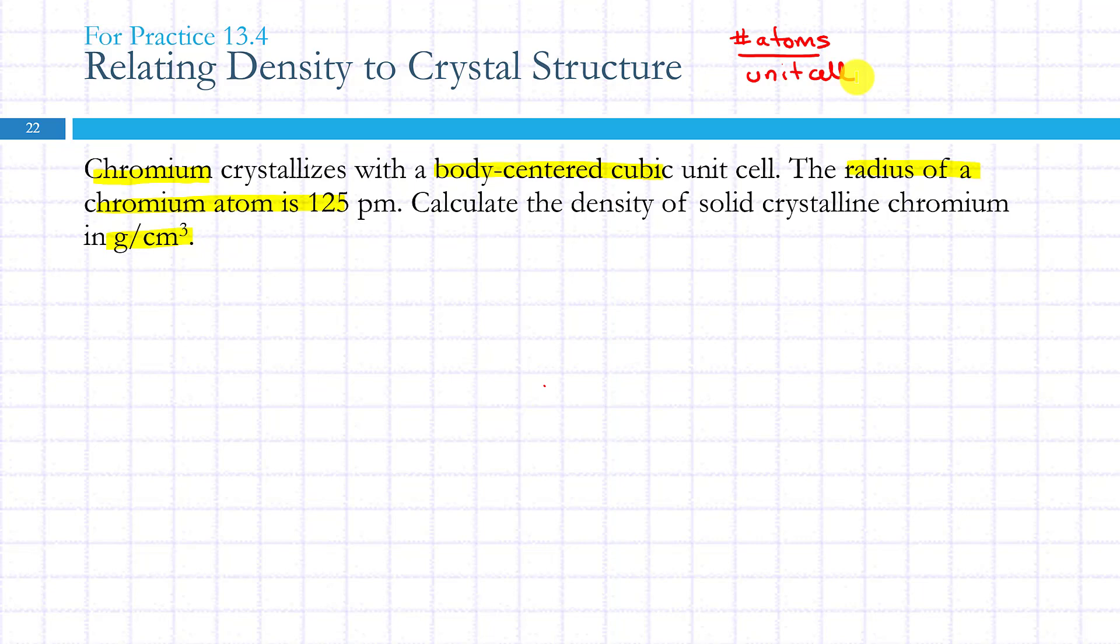...the edge length of the unit cell, so we need to know L. And then a third thing that we'll need to use is the molar mass of chromium. Chromium has a molar mass of 51.9981 grams per mole.